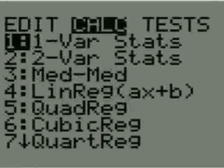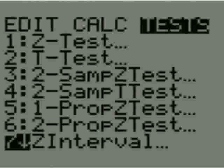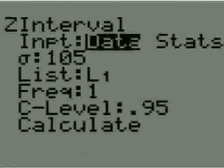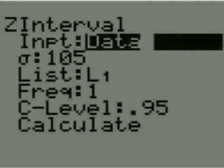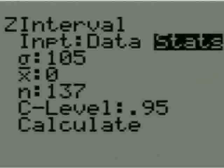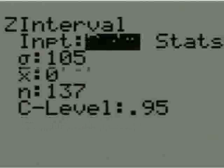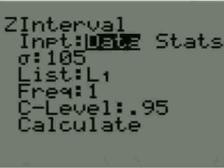Let's go to the calculator right now. If I go to stat, move over to tests, and move down, I see option 7 is z-interval. The z-interval is specifically a confidence interval for the mean based on the standard normal. The first thing it's going to ask me is: do I have data or statistics? If I select data, it needs sigma, where the data is, and the confidence level. Frequency is always one—it's very rare you change that.